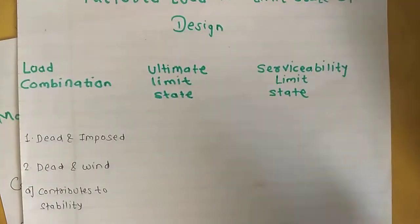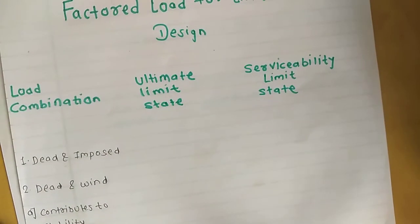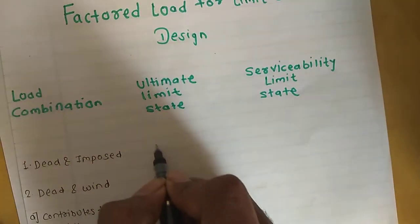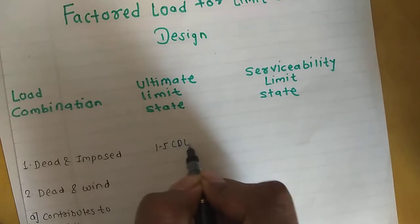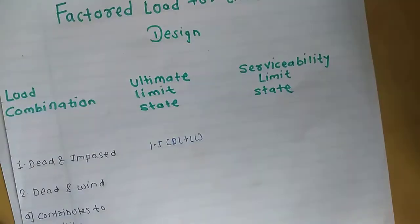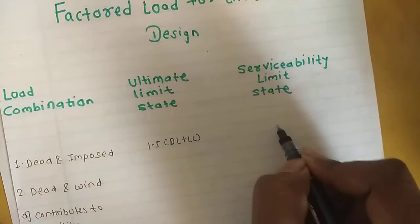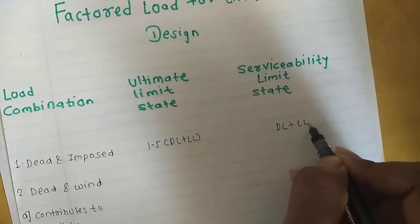Next is load combinations. For ultimate limit state, it is 1.5 dead load plus live load. For serviceability limit, it is dead load plus live load.